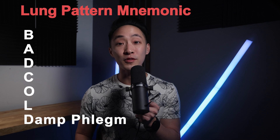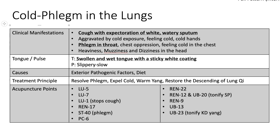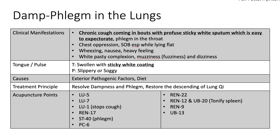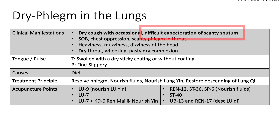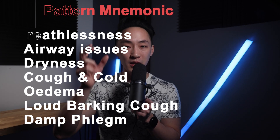The last letter in BAD COLD is D. This D stands for damp phlegm. We have a couple of patterns in the interior full patterns list that involve different kinds of phlegm, and they all present differently. For example, cold phlegm in the lungs produces more of a white watery sputum. Damp phlegm in the lungs is phlegm that's a little more sticky, still white, and easy to expectorate. And dry phlegm is a pattern where the phlegm is dry, making it more difficult to cough out.